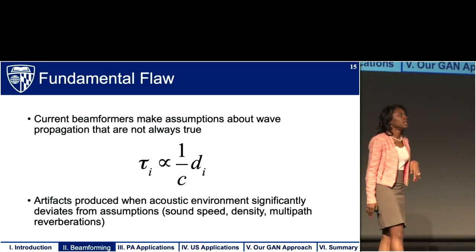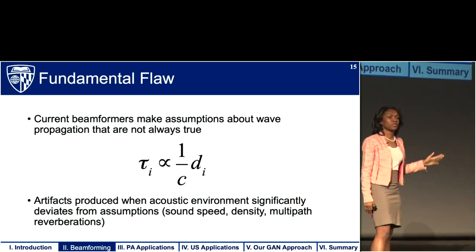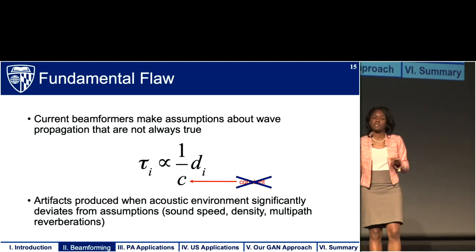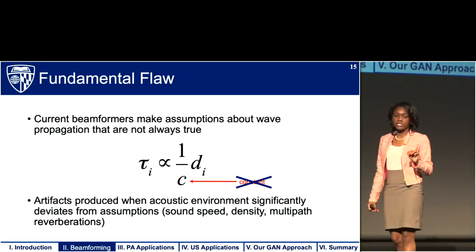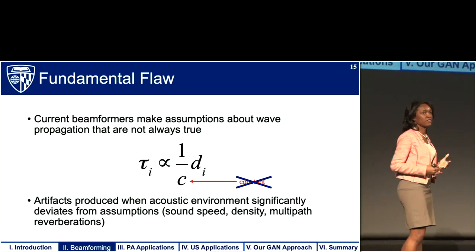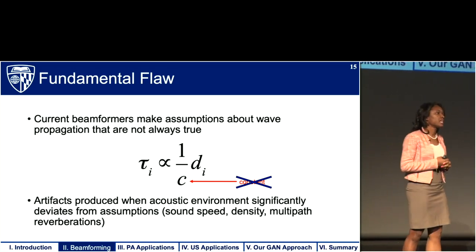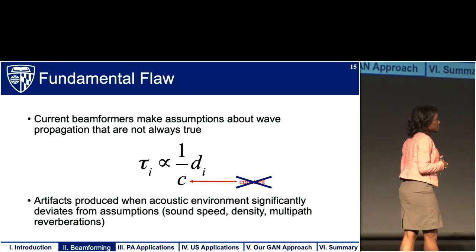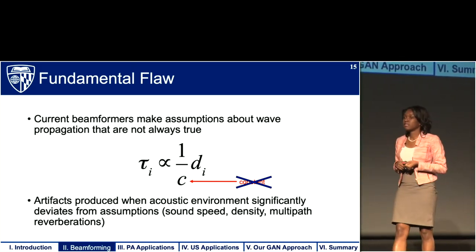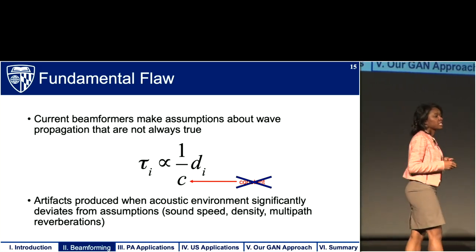This happens because of a fundamental flaw in the beamforming process — current beamformers make assumptions about wave propagation that are not always true. We apply time delays related to the distance from the source to the receiver through the speed of sound, but one assumption is that the speed of sound is constant. In reality, different tissues have different speeds of sound, and the bulk speed of sound within one patient differs from another, producing artifacts when the acoustic environment significantly deviates from these assumptions. This also includes assumptions about constant density and single-path propagation, when in actuality there can be multi-path reverberations or reflections.